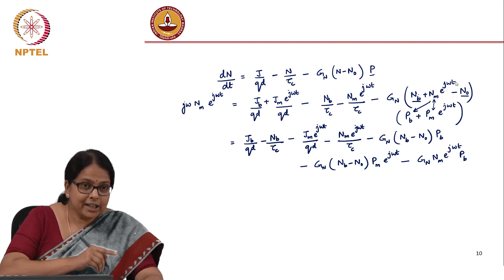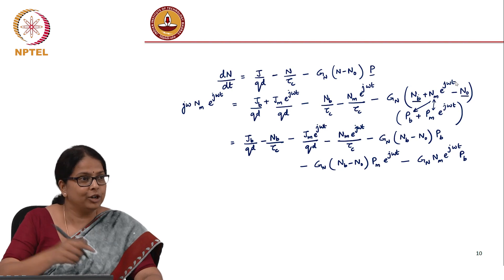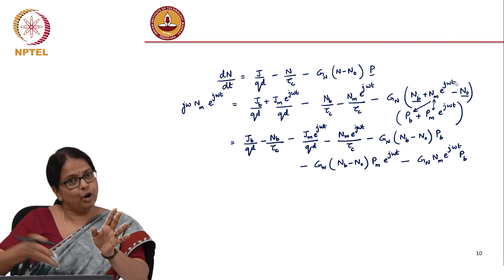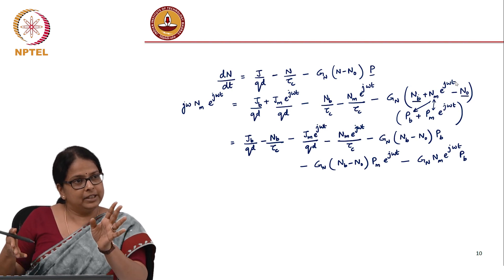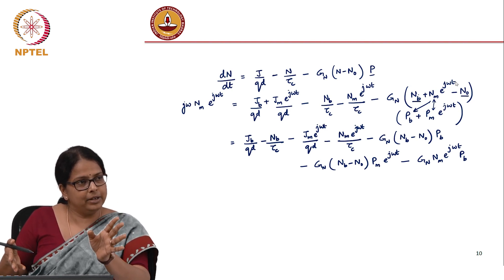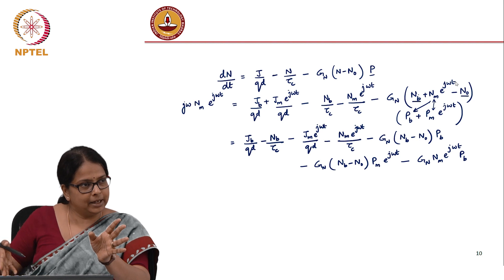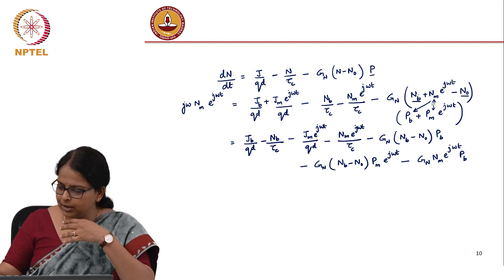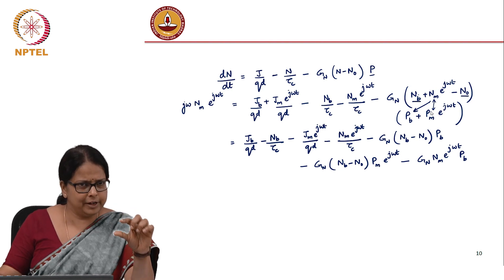This is the modulation frequency, how fast you are modulating. The mode is carrier frequency, this is modulation frequency. This 2*omega means if I am modulating at omega, I will have a response at 2*omega also. But because these terms are very small, we are ignoring their response.